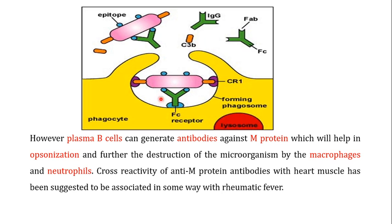However, plasma B cells can generate antibodies against the M protein, which will help in opsonization and further destruction of the microorganisms by macrophages and neutrophils. Antibodies have two parts: the Fab part, which binds to epitopes present on the surface of S. pyogenes, and the Fc part, which binds to Fc receptors present on phagocytes. When the antibody uses its Fab to bind to epitopes of S. pyogenes and its Fc to bind to the Fc receptor on phagocytes, this process helps in phagocytosis by macrophages and neutrophils.